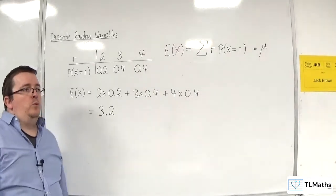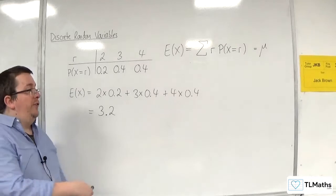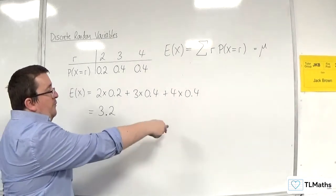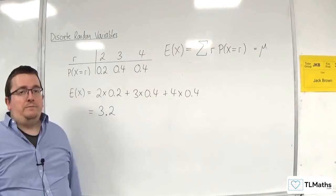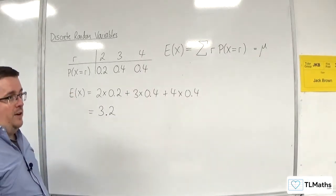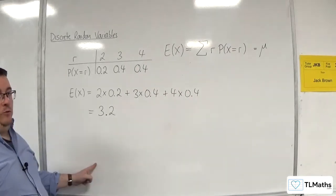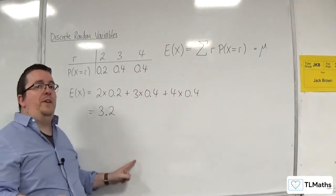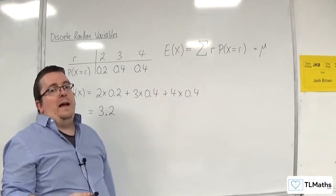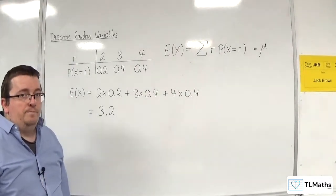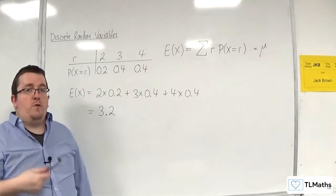Another example: if you are rolling a fair die with faces 1, 2, 3, 4, 5, 6, what would the expected value be? Because it's a fair die, each probability is the same. So you would have 1 times one-sixth, plus 2 times one-sixth, plus 3 times one-sixth, and so on. When you add all those together, you get 3.5.